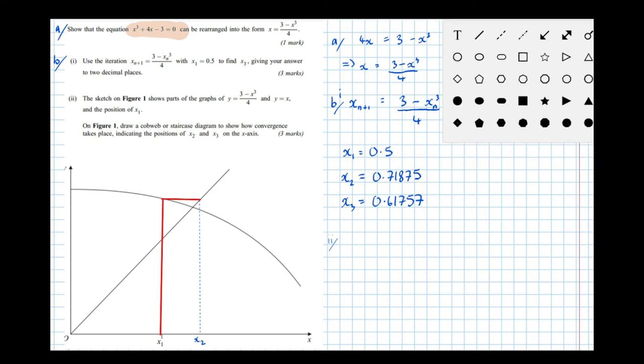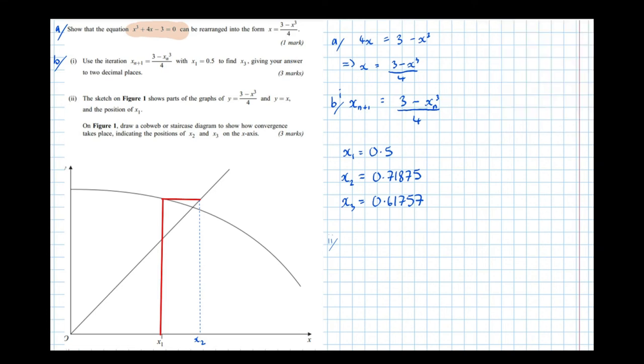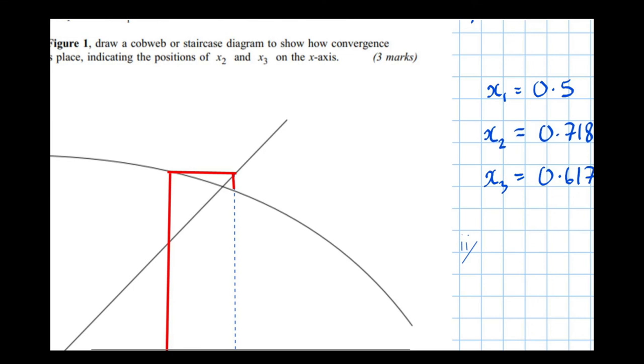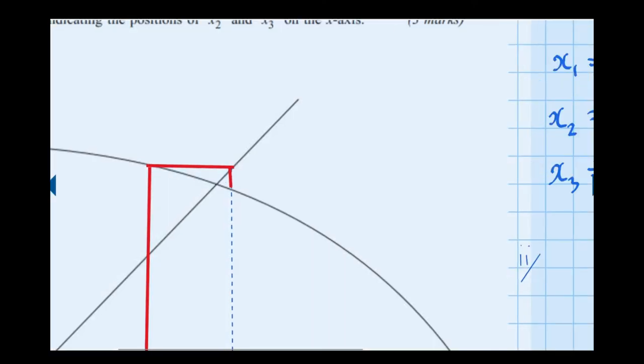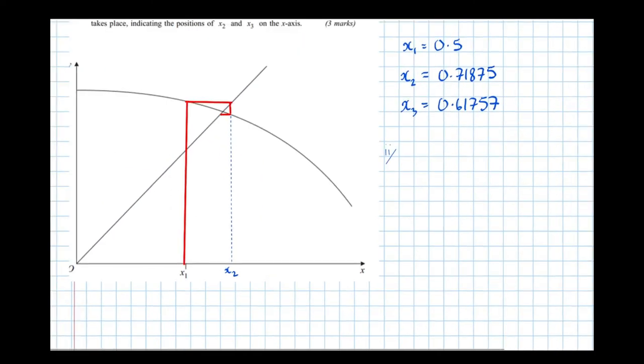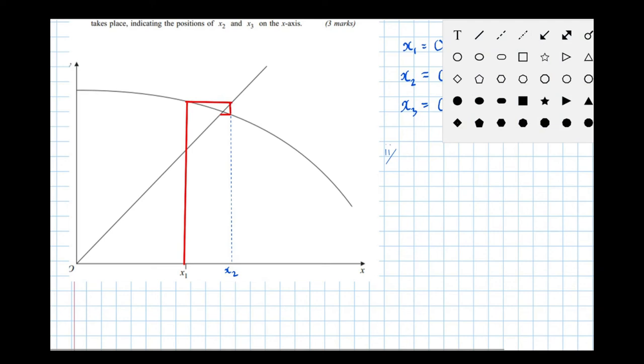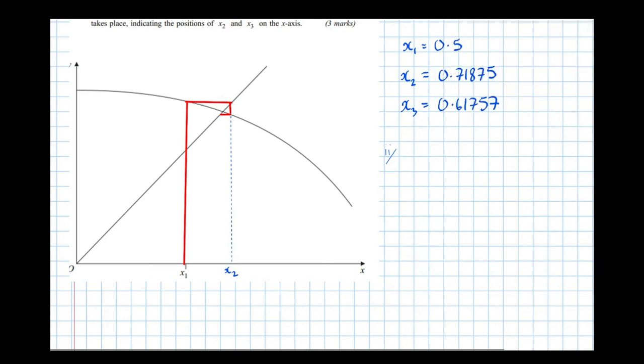So the next step, repeat. So go down to the curve this time. So vertically to the curve, which just so happens to be down. Then I'm going to zoom in here. Then horizontally to the line y equals x. And there we have it, our improved estimate of the answer, x3, which we should mark on the diagram as requested in the question, x3.